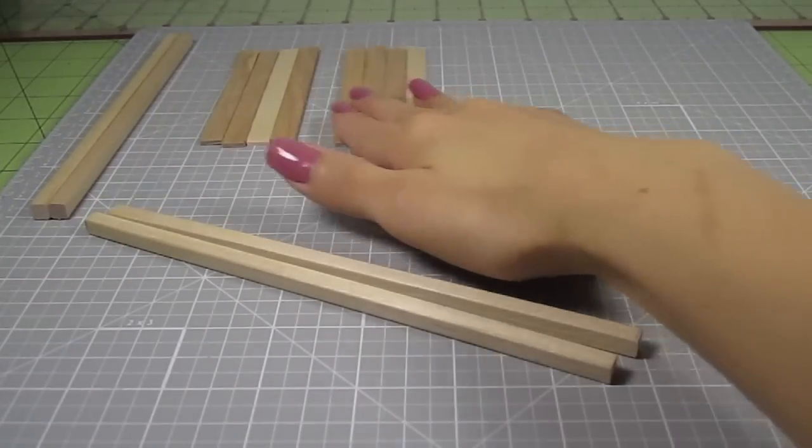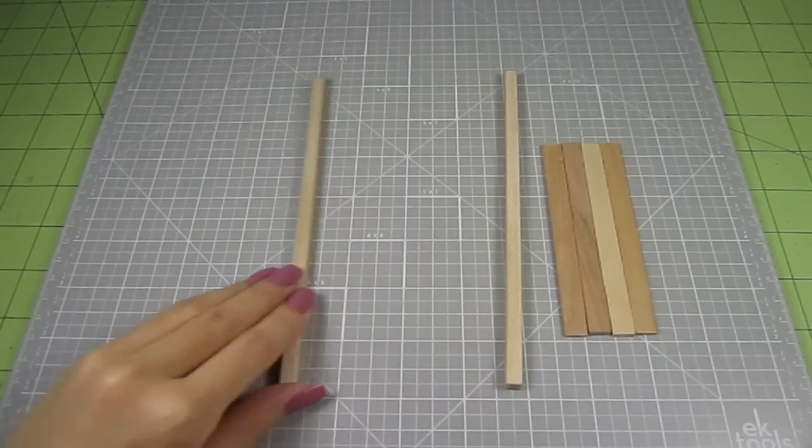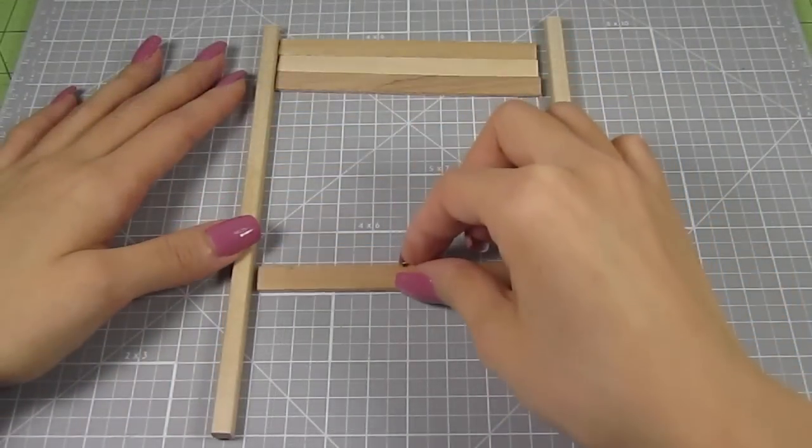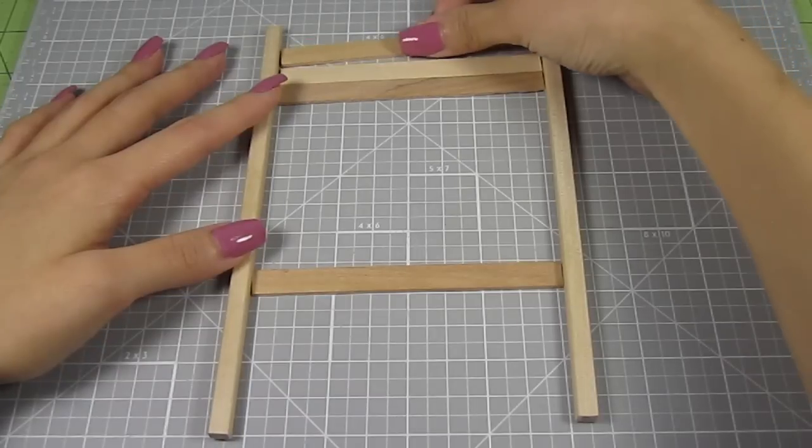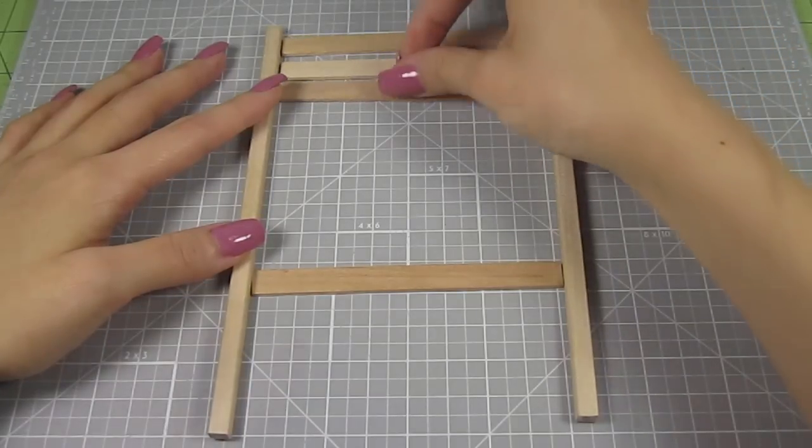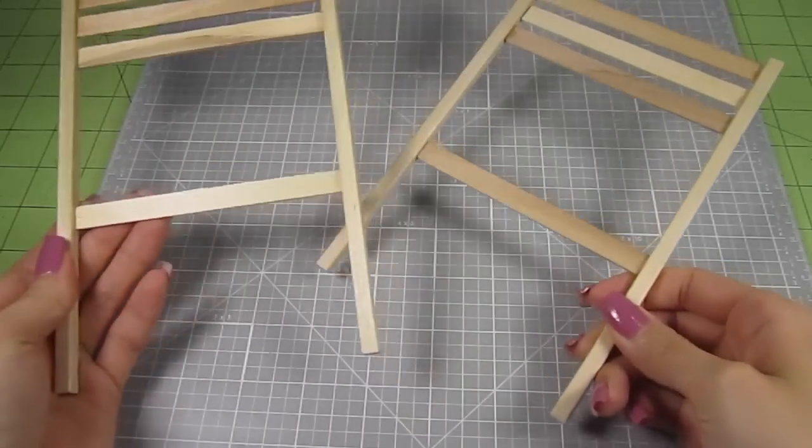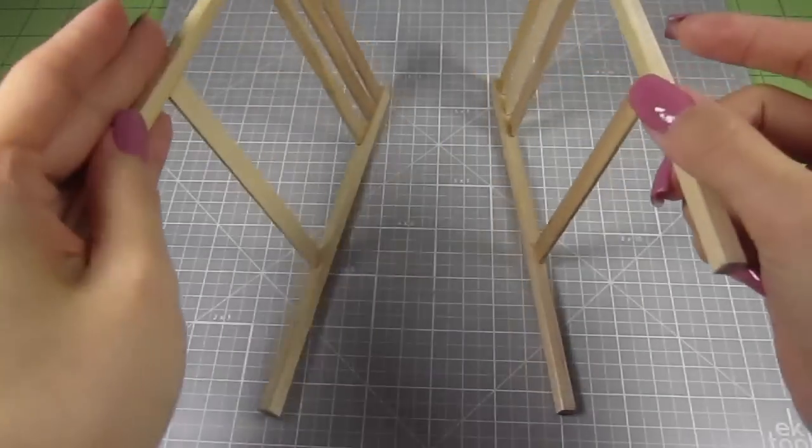Now take 2 of those square dowels we cut and 4 popsicle sticks. Position the sticks horizontally between the dowels. Position one stick 2.5 inches away from one end and the other 3 sticks closely together at the other end. Glue them in place with wood glue. Do this for the other set of sticks and dowels too. Now you have the headboard and the footboard.